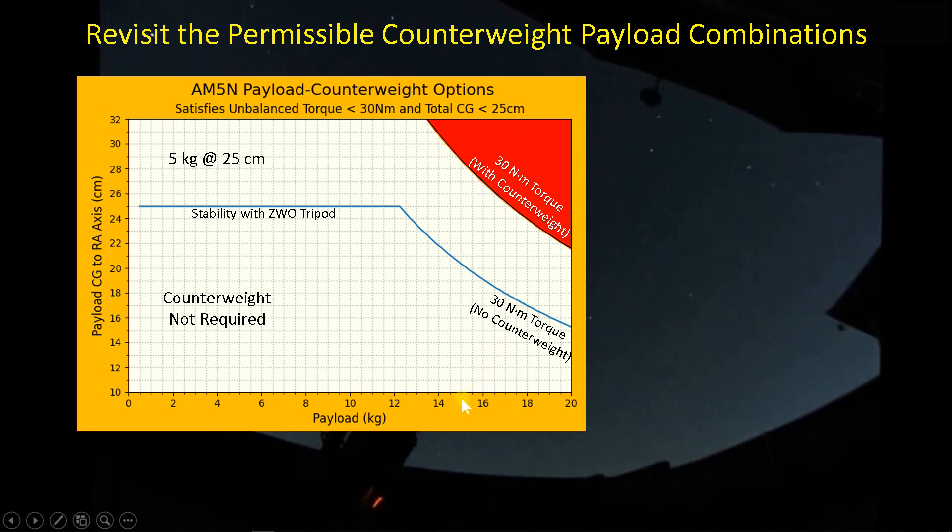Now, one thing I'm not showing is the 15 kilogram limit. ZWO says when your payload is 15 kilograms or higher, you need to start using the counterweight. And I'm not showing that here. It's not really necessary because it's going to take care of itself. The ZWO and their analysis assumed that the payload was always at 20 centimeters above the RA axis. And when you follow that 20 centimeter offset over, it hits this 30 newton meter torque limit. Guess where? Right at 15 kilograms. So what they're essentially saying is, yeah, you can have a higher payload weight of 18, 19, 20 kilograms, but you're unlikely to be able to put that payload weight any closer than 20 centimeters from the RA axis.